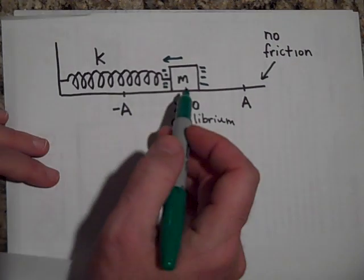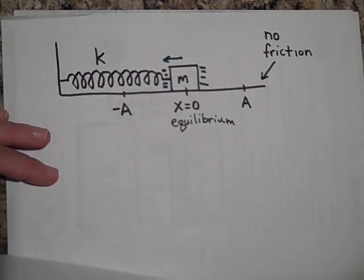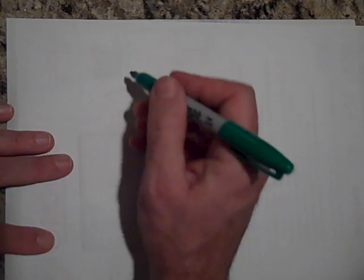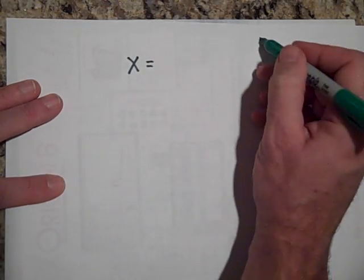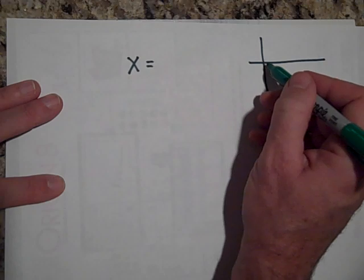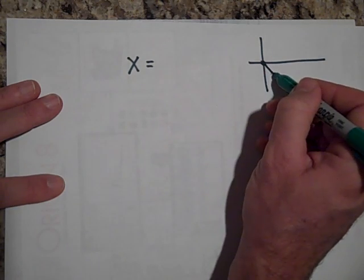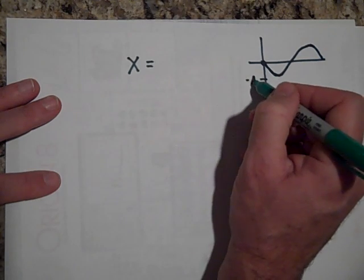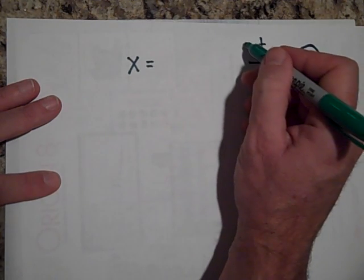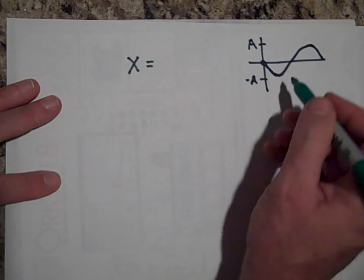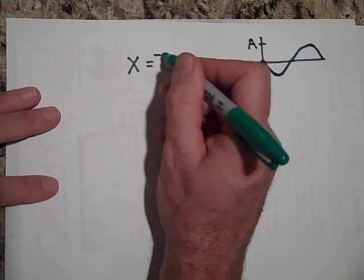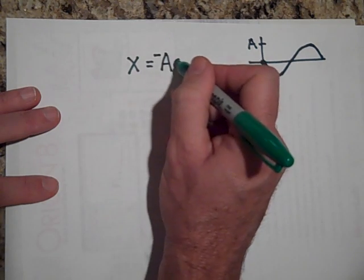If at t equals zero, it's got to be at 0, but it's got to be moving in the negative x direction. Well, then we would do x is equal to, see, this is the function we would want to use. It starts at 0, but it's moving down first. It's actually moving in the negative territory. It's moving toward negative A, not positive A. Okay. This function is negative sine. It's a negative sine function. So it would be negative A sine omega t.